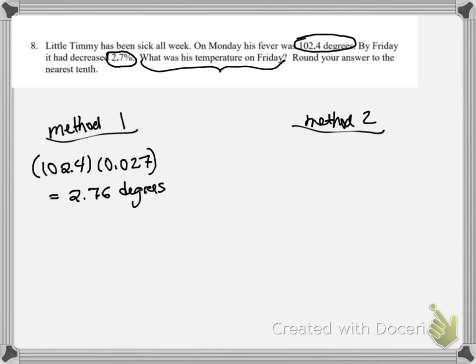So is that our final answer? Was Timmy's temperature 2.76 degrees Fahrenheit? Absolutely not. It was 102.4 degrees Fahrenheit, and it decreased by that amount.